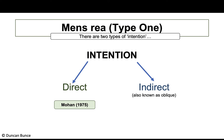The key case for direct intention is Mohan (1975). A police officer attempted to halt a car, and the driver accelerated at the officer. The court defined direct intent as 'a desire to bring about the prohibited consequence' — the defendant wants the crime to occur. For example, if someone points a gun at a victim's head and pulls the trigger, their direct desire to kill is clear. The intent to kill forms part of the mens rea for murder.